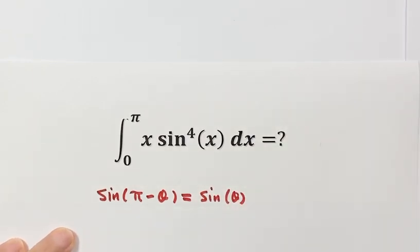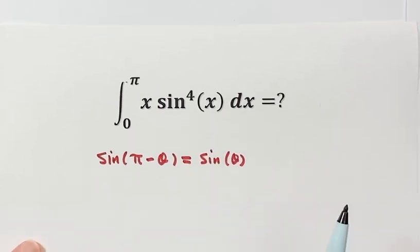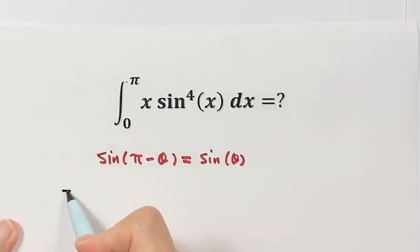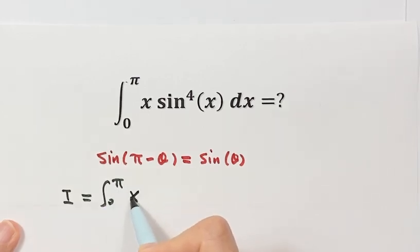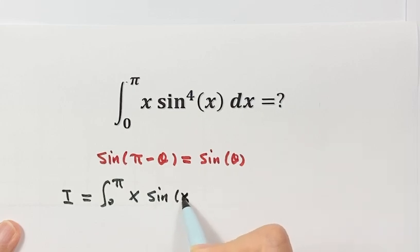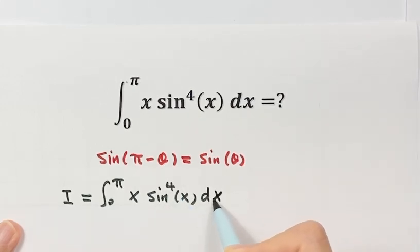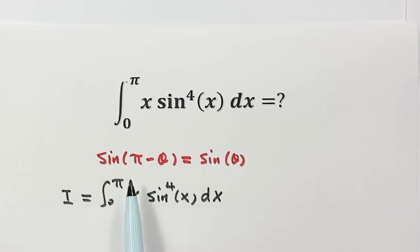For convenience, we are going to write I for this integral. So here we have I equals the integral from 0 to π of x times sine to the 4th power, dx. Now, how to solve this integral? We are going to use a substitution because we want to use this identity.